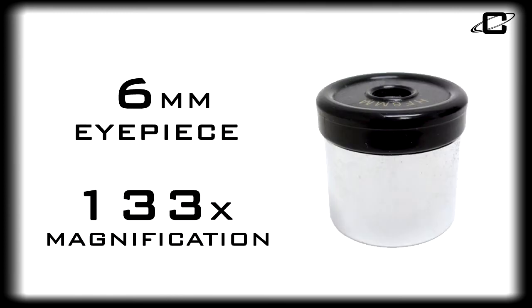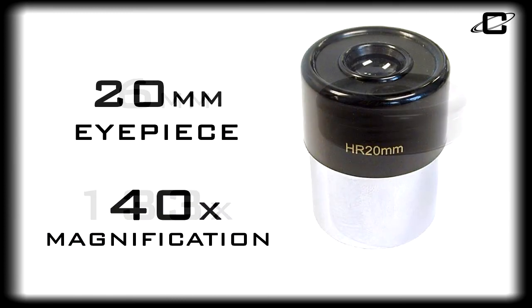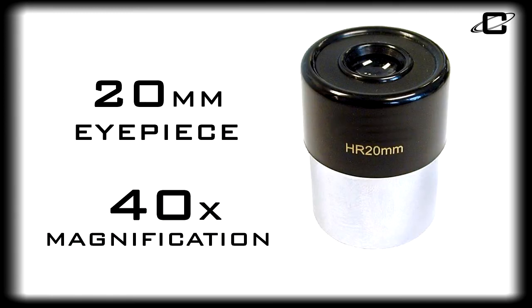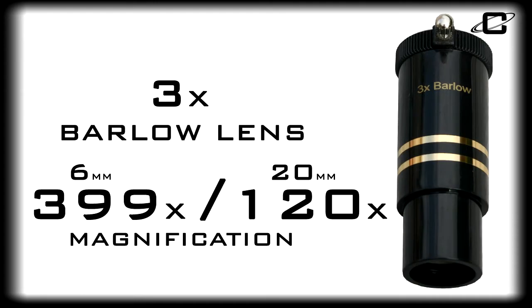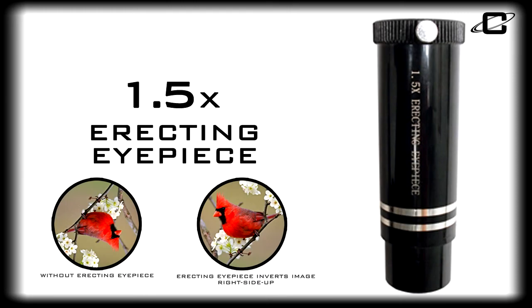Accessories include 6mm and 20mm 1.25 inch eyepieces, a 3-power Barlow lens that increases the power of the included eyepieces by 3 times, and a 1.5-power erecting lens that transforms the image right side up for terrestrial use.